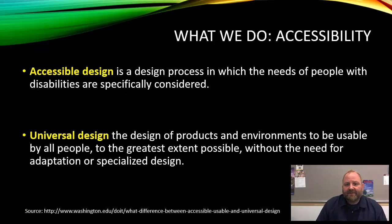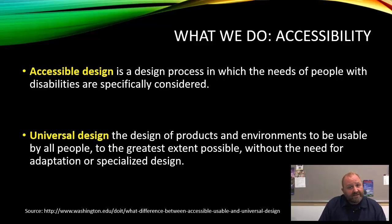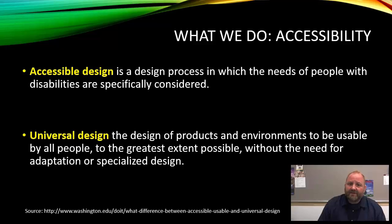Let's talk about accessibility first. We're talking about accessible design and universal design. Accessible design is about providing for the needs of people with disabilities — blindness, hearing issues, limited mobility, those kinds of things. Universal design is also about producing an environment that's truly equal for everyone, so that nobody has to go to a different place in order to get their learning needs met.